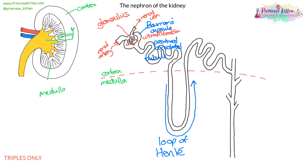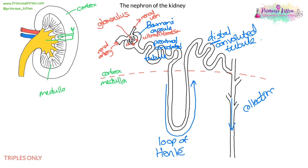The loop of Henle is there to absorb substances. The longer the loop of Henle, the more water will be absorbed — so loops of Henle in desert creatures are much longer than in creatures that live in areas with lots of water. On the other side of the loop of Henle, you've got the distal convoluted tubule — 'distal' meaning in the distance, away from the Bowman's capsule. Then the last duct is the collecting duct, which feeds into the ureter.